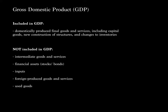Not included in GDP are intermediate goods and services, financial assets like stocks or bonds, inputs, foreign produced goods and services, or used goods.